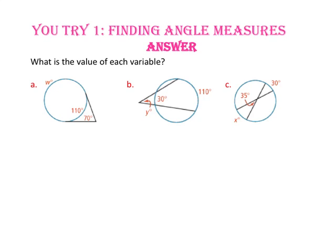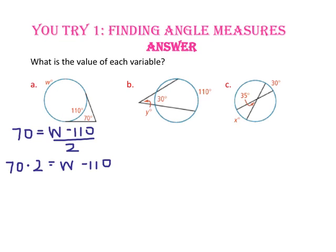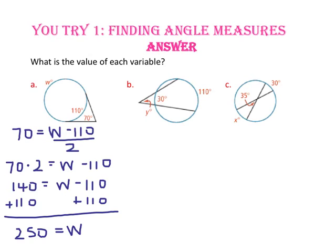What is the value of each variable? In part A, we have two tangents that intersect outside the circle, so this angle measure will be half of w minus 110. Let's multiply both sides by 2 and 140 equals w minus 110. Add 110 to both sides and 250 equals w. Some of you may have noticed that w plus 110 equals the full circle, so an easier way to find w would be to take 360 minus 110, which gives us 250.